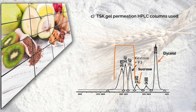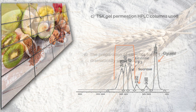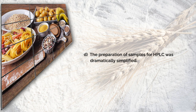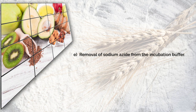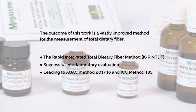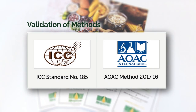Together with these changes, other improvements to the method were introduced: D. The preparation of samples for HPLC was dramatically simplified. E. The removal of sodium azide from the incubation buffer was possible with the use of the shorter incubation time, allowing less chance of microbial contamination. The outcome of this work is a vastly improved method, namely the Rapid Integrated Total Dietary Fibre Method, subjected to a successful inter-laboratory evaluation under the auspices of AOAC International and ICC to become AOAC Method 2017.16 and ICC Method 185.